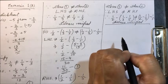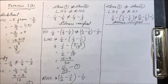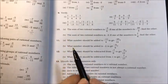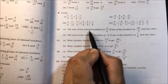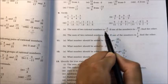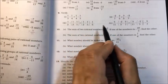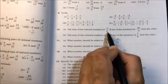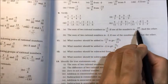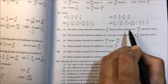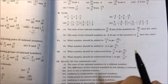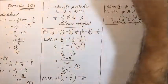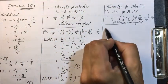Now moving to the tenth question, part B. The sum of two rational numbers is minus 3 by 4. One of the numbers is minus 28 upon 3, and we have to find the other number.